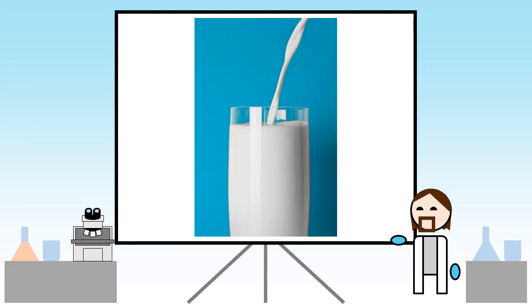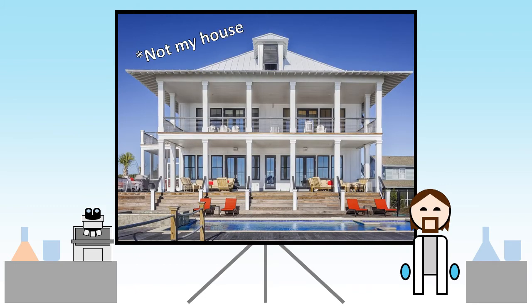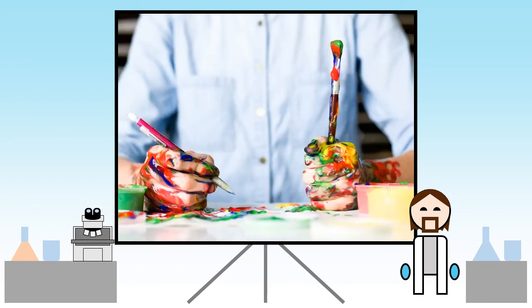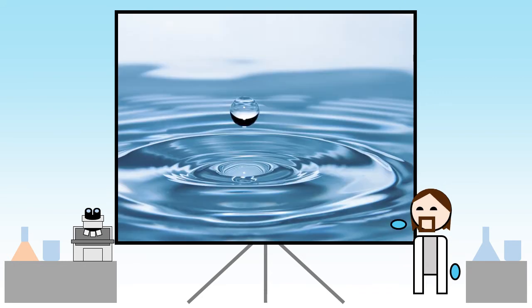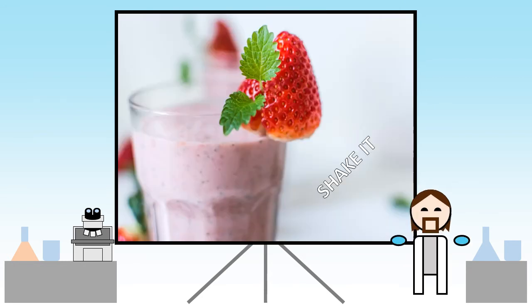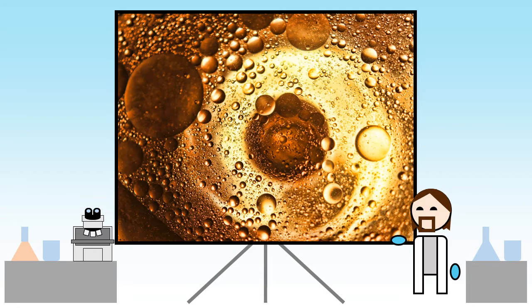You probably have emulsions in your home. Simple ones are really easy to make. Add water and oil to a bottle with a small amount of washing up liquid and shake. What you get is lots of tiny drops of oil floating about in the water. If you've added enough washing up liquid, the droplets should be small and stay around for a long time.